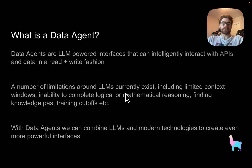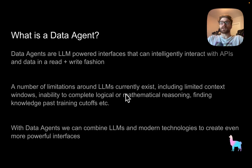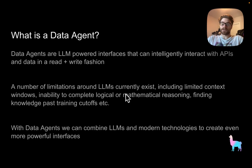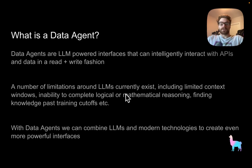So to start off, what exactly do we mean by a data agent? Data agents are large language model powered interfaces that can intelligently interact with APIs and data in a read and write fashion — essentially allowing our large language models to call functions, call APIs, and interact with the world around it. There are a number of limitations around base level large language models, including limited context windows, inability to complete logical or mathematical reasoning, and finding knowledge past training cutoffs. With data agents, we can combine large language models and modern technologies to create even more powerful interfaces.